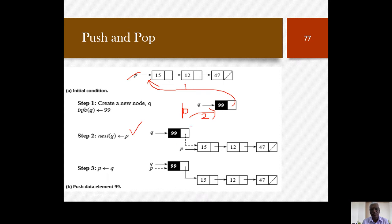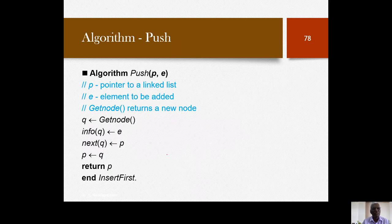After these two operations, p points to 99 at the top, followed by 15, 12, and 47 at the bottom. The new element is now at the top. The push function is simple: get a new node q, put the info, execute next of q equals p and p equals q, then return the updated value of p. That completes the push operation.